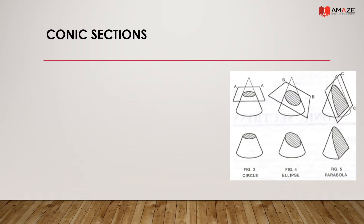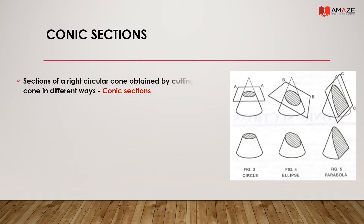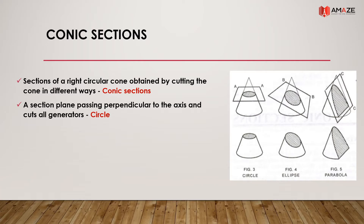We will cover the conic sections and miscellaneous curves. First point: sections of a right circular cone obtained by cutting the cone in different ways are conic sections. A section plane passing perpendicular to the axis and cuts all the generators — we get a circle.